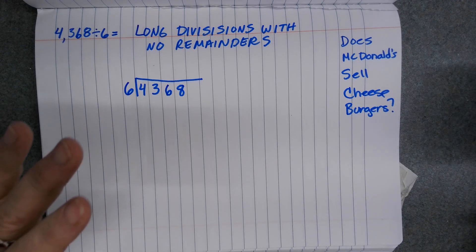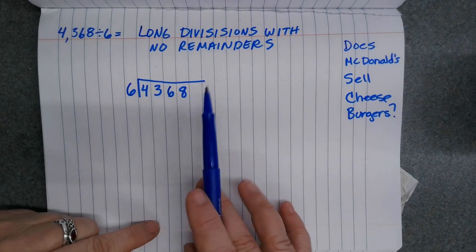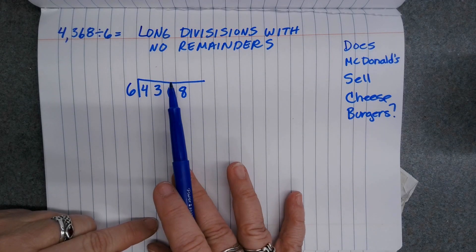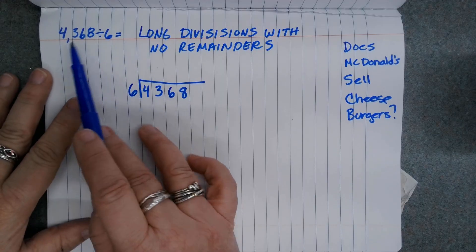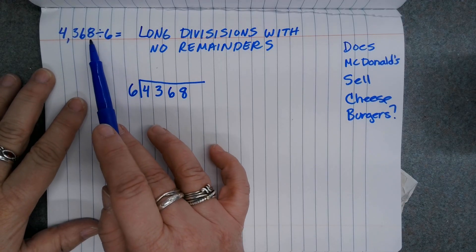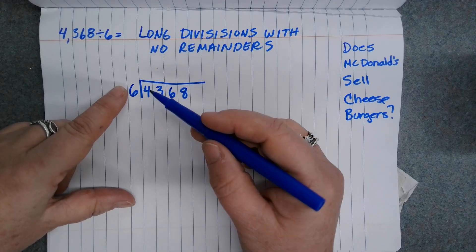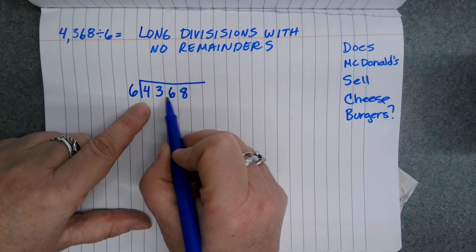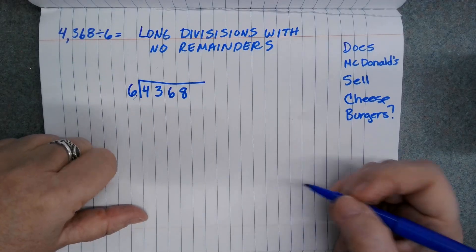This is a little reminder for students in my class on how to use long division. In this case, we're not going to have any remainders. Here's my problem: I have 4,368 divided by 6. First thing I'm going to do is set it up properly. I'm going to put the 4,368 underneath my roof and have my divisor over here to the side.